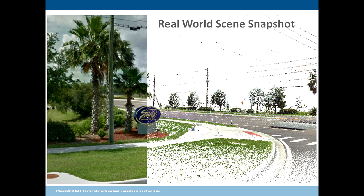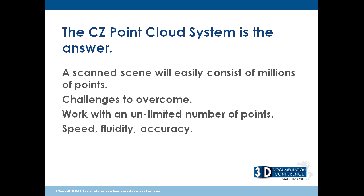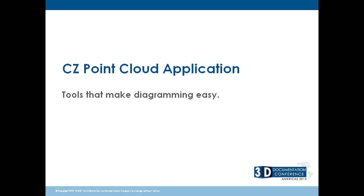That's what we're always aiming for. We've got our point cloud system — CZ Point Cloud — and that is the answer. A scan scene can consist of millions and millions of points, so there are challenges to overcome: how do we work with this data quickly and fluidly, and deal with an unlimited number of points on machines like this old laptop? We want speed, fluidity, and accuracy, and this application takes care of all that so you can diagram. I'm going to show you some snapshots of what we can do and some movies of what happened so we have time to look at everything.